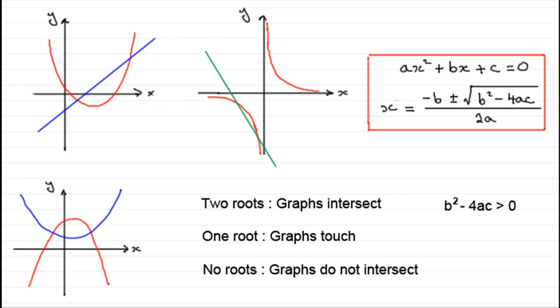If b² - 4ac is greater than zero, the square root of this is a positive number, you get two solutions. So, we have two roots. If the graphs touch, that is one root, then b² - 4ac equals zero.